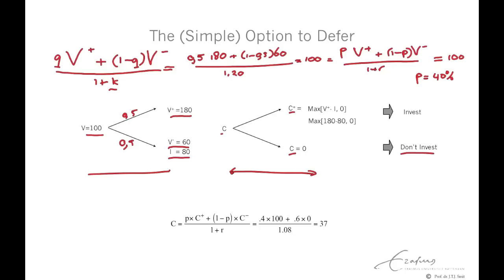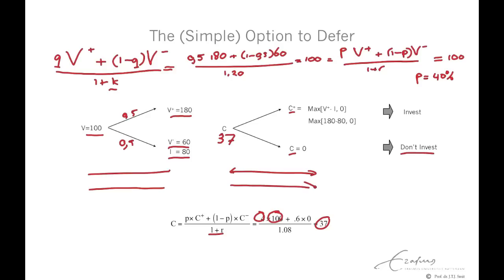So how does that work? The current value of this conditional payoff is: p × C+ + (1 − p) × C−, divided by (1 + r). With a risk-neutral probability of 40% times the truncated payoff of 100, plus 60% times 0, divided by the risk-free rate, we get 37. So 37 is the value of the option to defer. To summarize: if there's no truncation, we can use both methods — adjusting for risk in the denominator or in the numerator. But once we calculate an option with a truncated payoff, we can only use the certainty equivalent method with risk-neutral valuation.